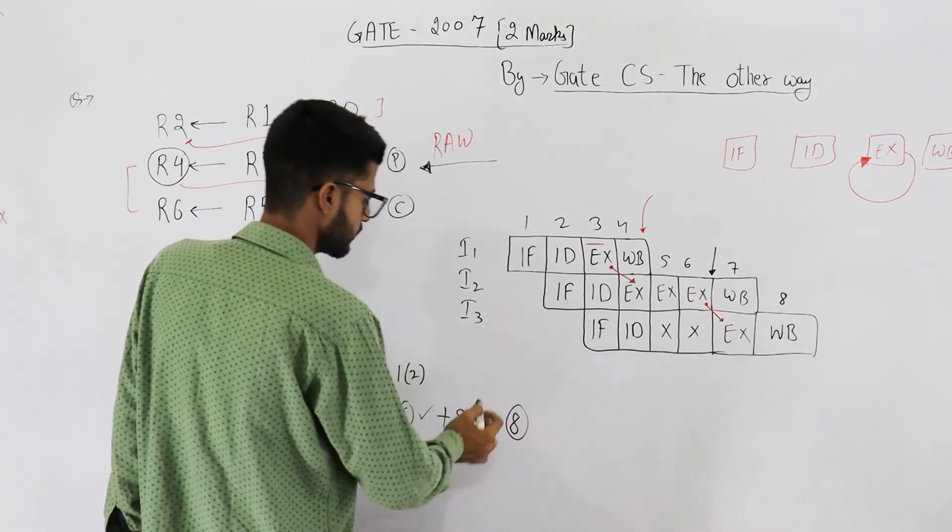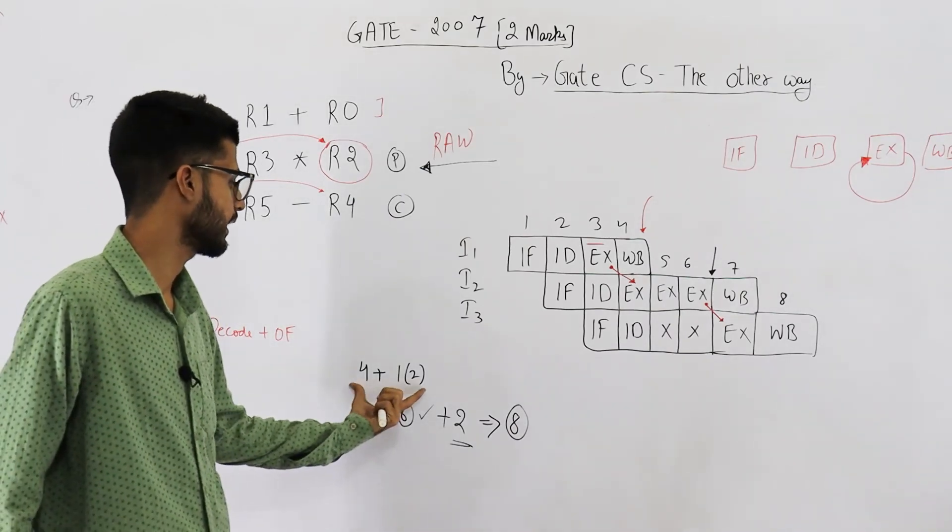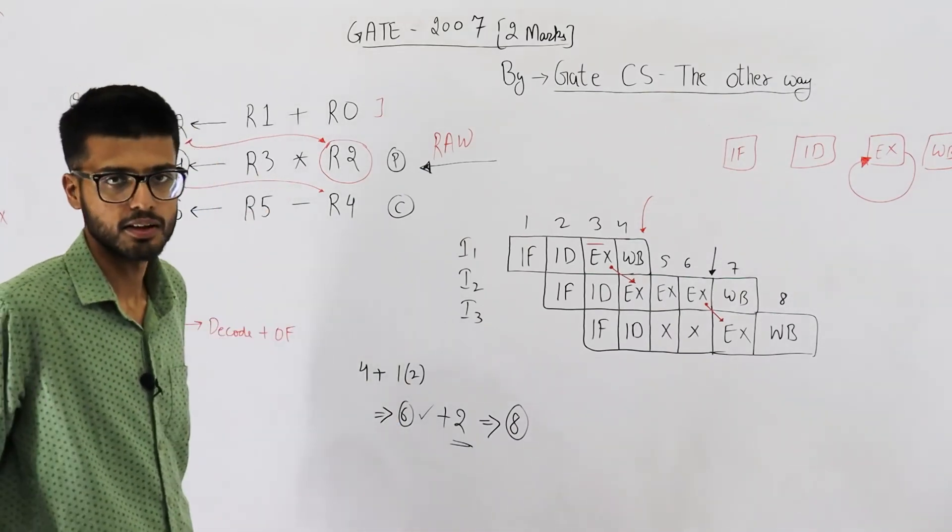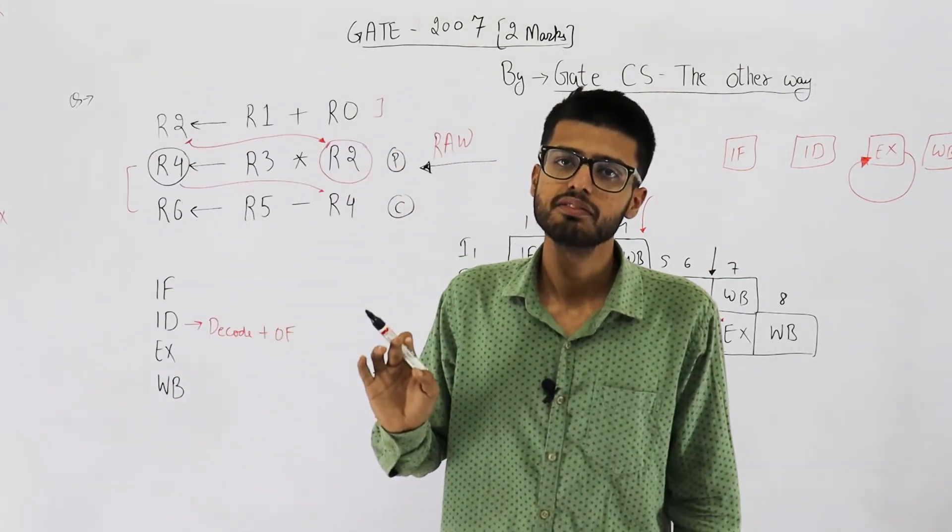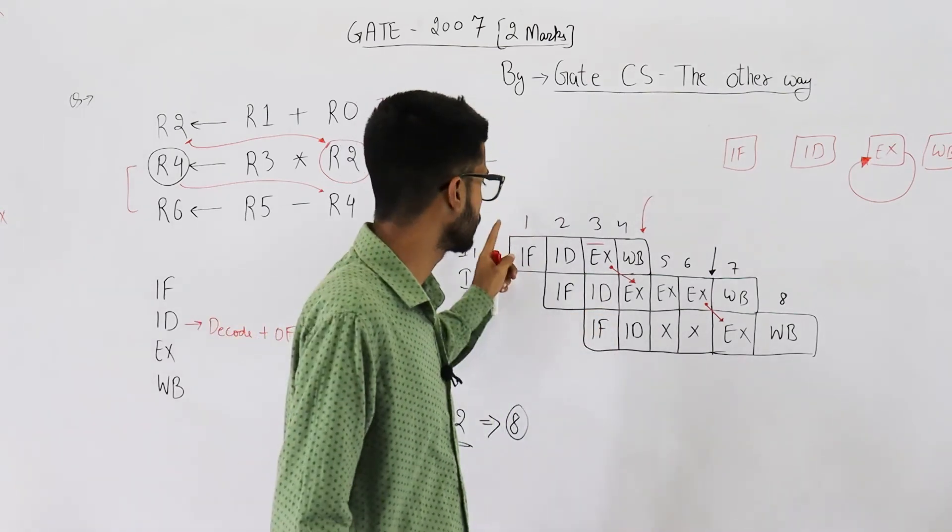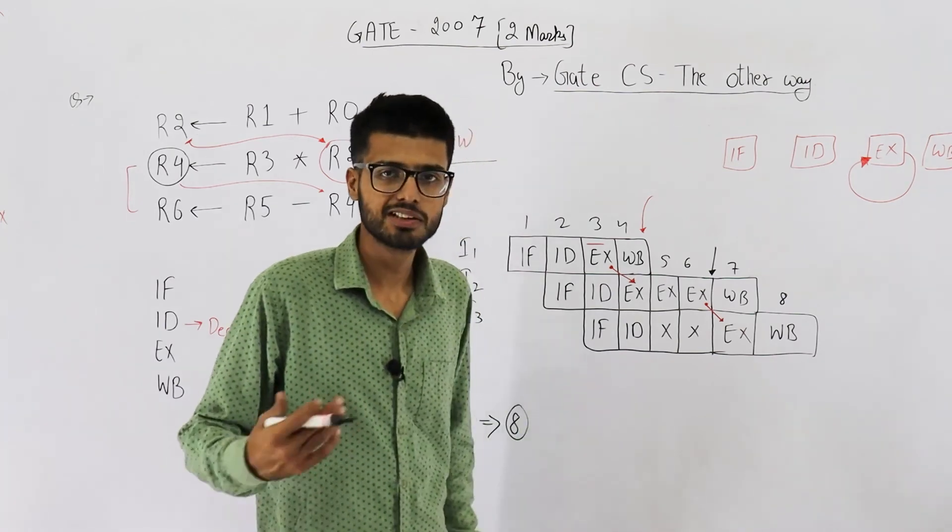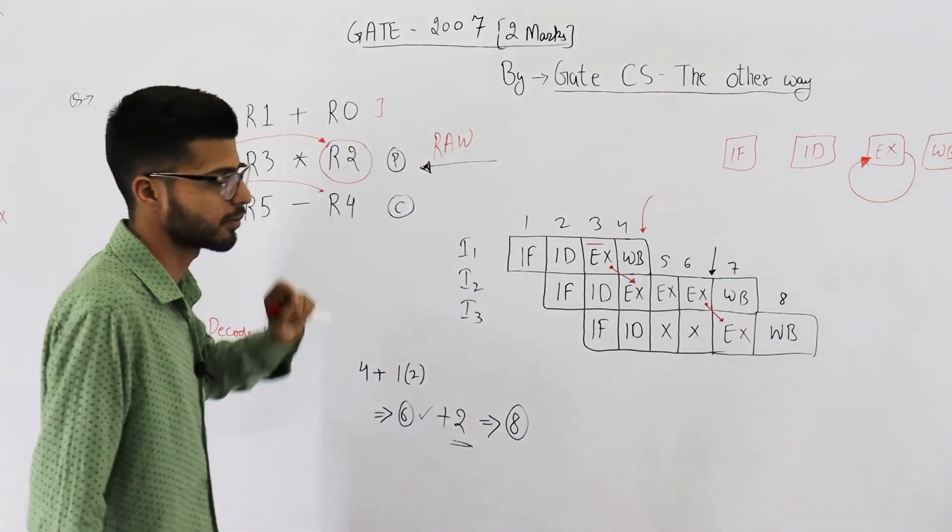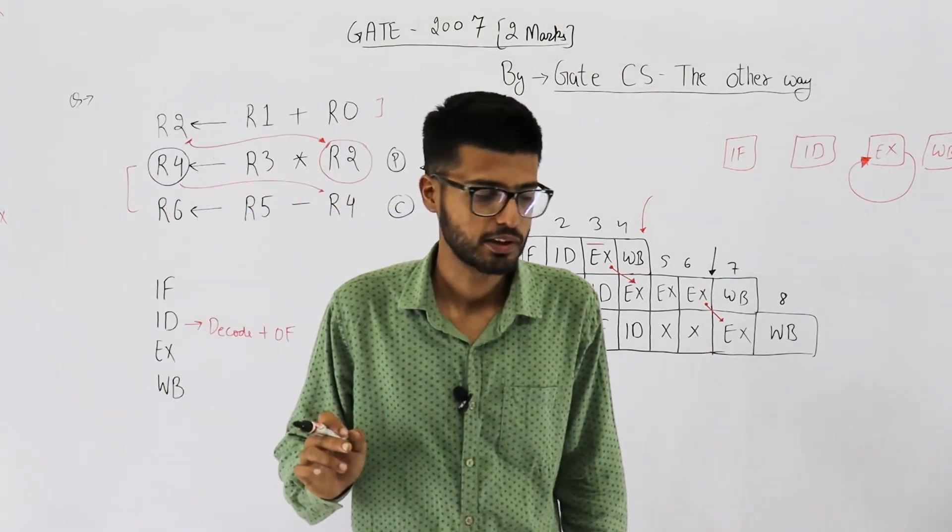This is your answer, just add the extra cycles. Why did I neglect these dependencies? Because using operand forwarding we have kind of avoided all the stalls. So you can just consider it to be a diagram of such a program where there are no dependencies. That is only possible with the help of operand forwarding.